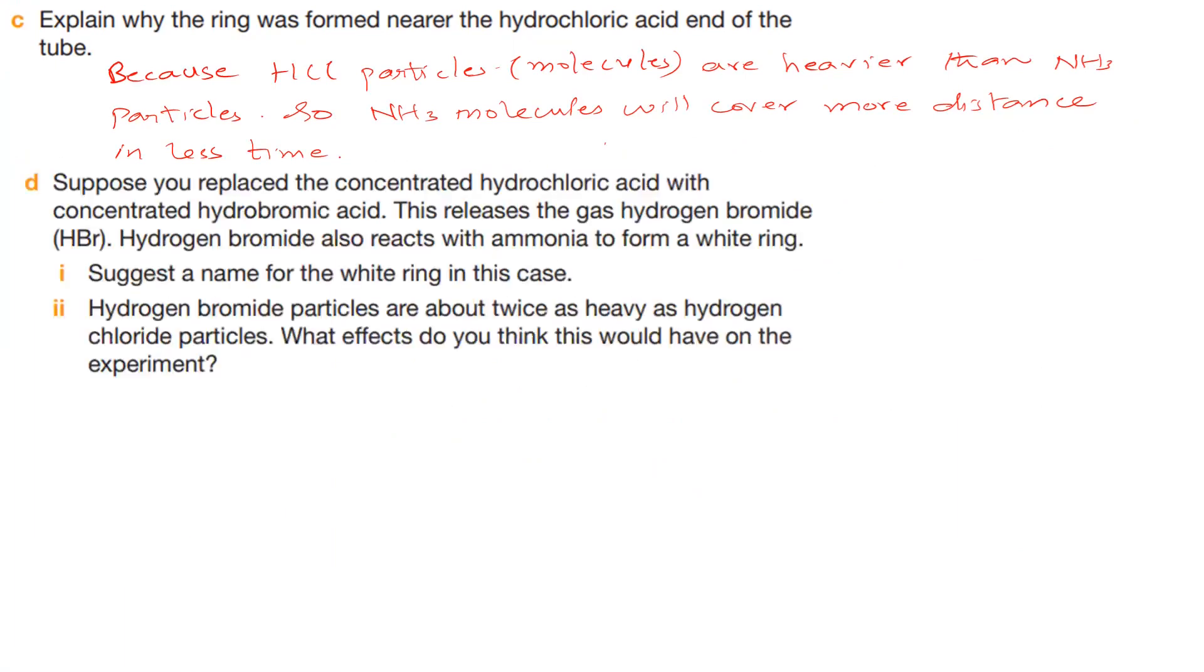Part D. Suppose you replaced the concentrated hydrochloric acid with concentrated hydrobromic acid. This releases the gas hydrogen bromide, and hydrogen bromide also reacts with ammonia to form a white ring. Suggest a name for the white ring in this case. We name the white ring ammonium bromide. Through the equation, ammonia gas reacts with hydrogen bromide gas to make ammonium bromide.